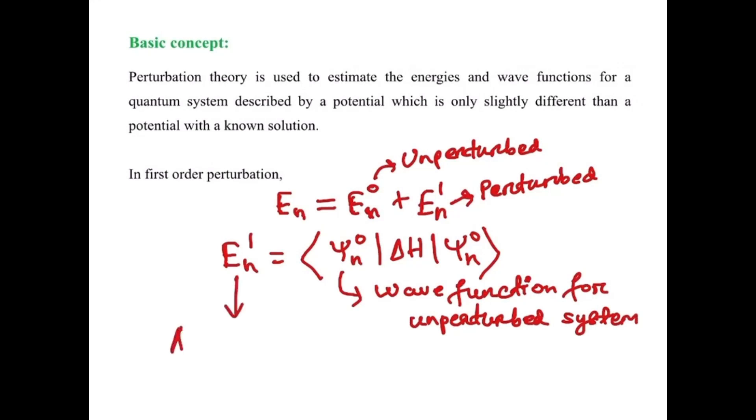This can also be called average value of delta H. Now coming to the solution, we have to find the first order correction to the first excited state.